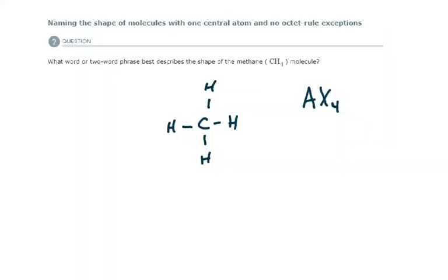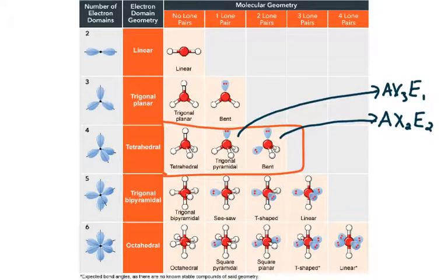So, going back again to this example, you have methane, four electron domains, no lone pairs, or molecular geometry with no lone pairs, and four electron domains would be tetrahedral. Tetrahedral.